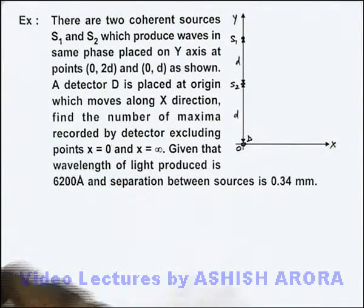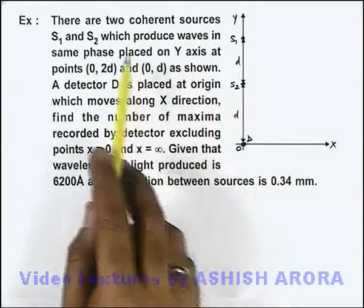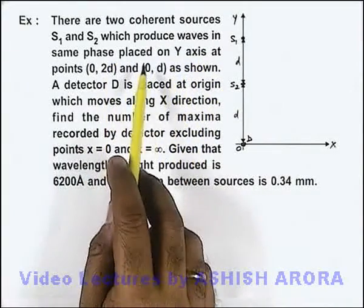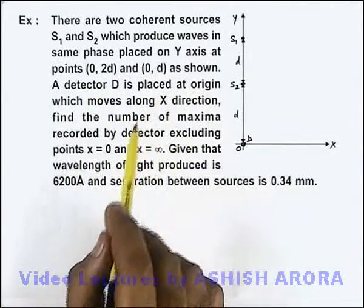In this example we are given that there are two coherent sources S1 and S2 which produce waves in same phase, placed on Y axis at points (0, 2d) and (0, d) as shown.